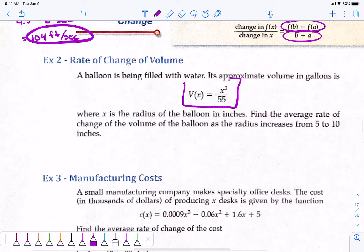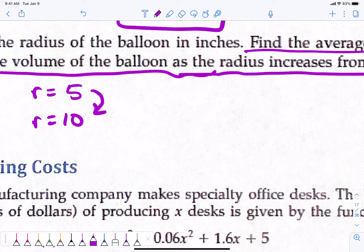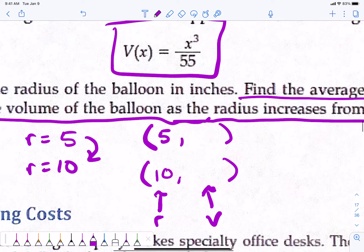Rate of change of volume. They're giving me the volume here, V(x) = x³/55, and they're saying find the average rate of change of volume as the radius increases from 5 to 10 inches. So, we're doing a radius of 5 and a radius of 10. I write this as an ordered pair. We're starting with 5 comma something and we're going to 10 comma something. This is the radius. This number is the volume. How do I find the volume at 5 and the volume at 10? Plug it into this formula.